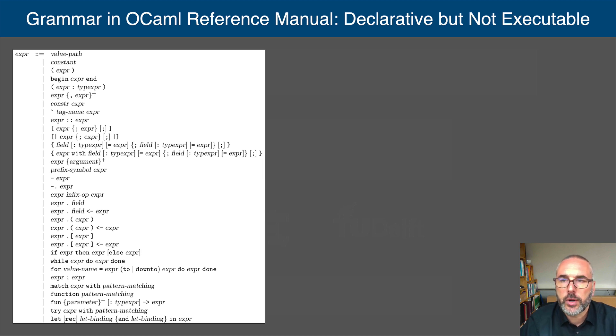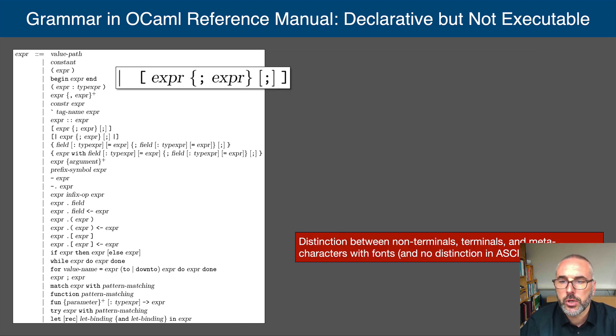The grammar in the OCaml reference manual does not meet all of our requirements. It provides a good documentation of the language, but it cannot be used, as is, to generate a parser from. First, the distinction between non-terminals, terminals, and meta-characters is made using fonts, and in the ASCII version, not at all.